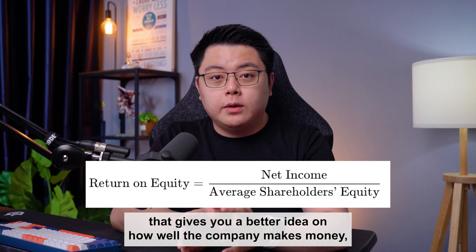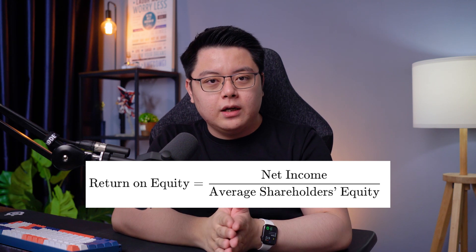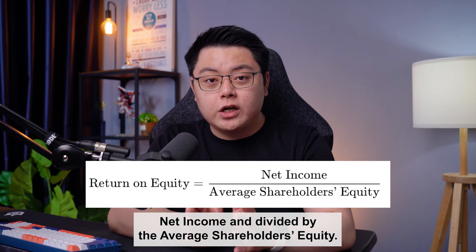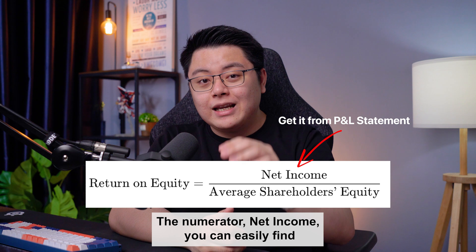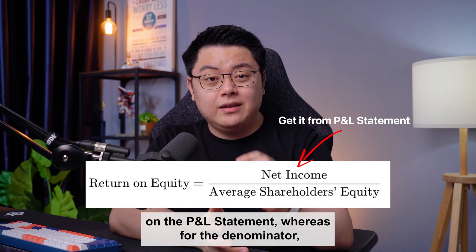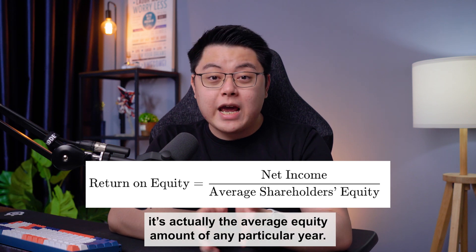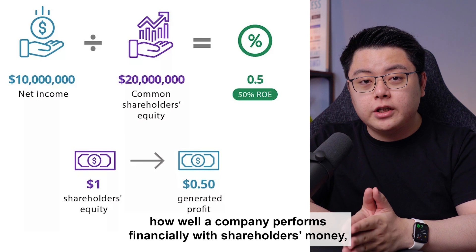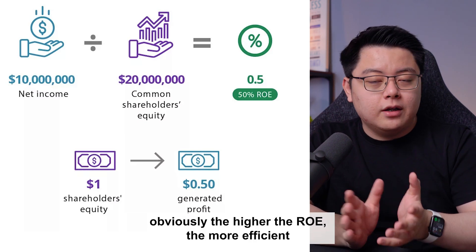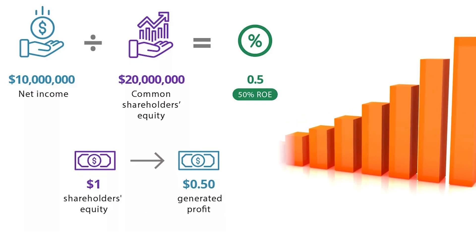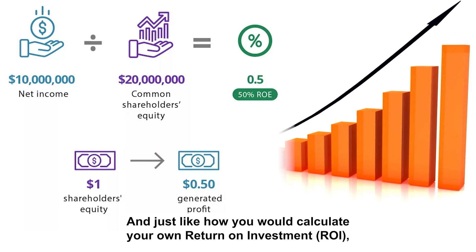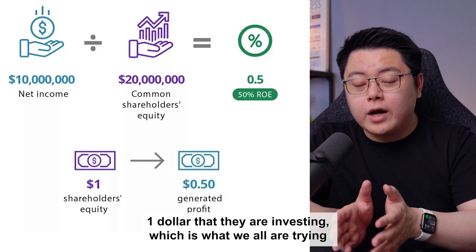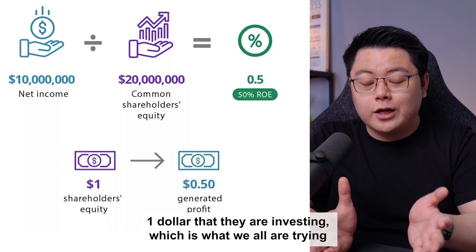Now let's look at another financial ratio that gives you a better idea on how well the company makes money: the return on equity, or ROE. The ROE can be calculated by taking net income divided by the average shareholder's equity. The net income can be found on the P&L statement, and average shareholder's equity is the average equity amount for any particular year. Investors love to use this formula to determine how well a company performs financially with shareholders' money. The higher the ROE, the more efficient or profitable a company is — and just like return on investment ROI, a positive ROE is definitely a good thing.